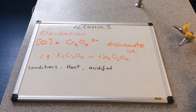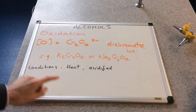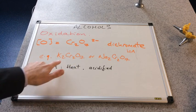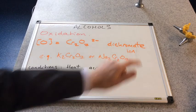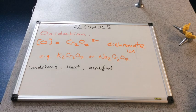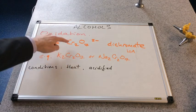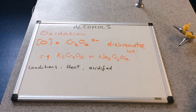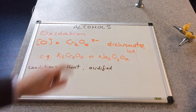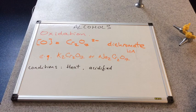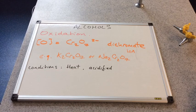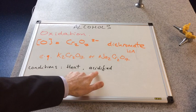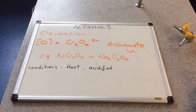There's a couple of sources of this. In the lab we would either use potassium dichromate or sodium dichromate. Both of those contain this dichromate ion, so these could be used as the oxidizing agent. The conditions: it has to take place with heat and the dichromate ions must be in acidified conditions.